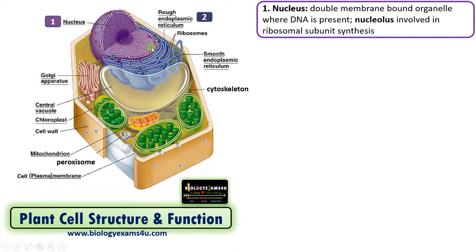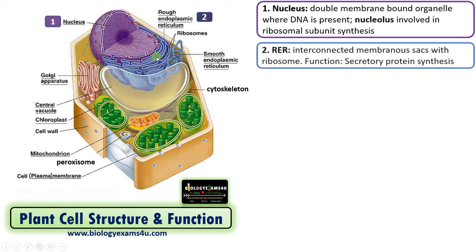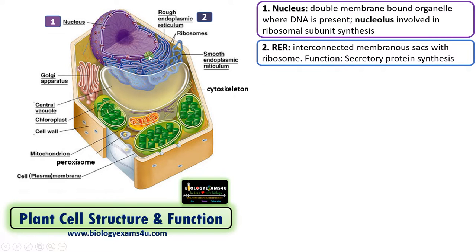The next organelle attached to the nuclear membrane is the RER, or rough endoplasmic reticulum. It is called rough because it is studded with ribosomes. Endoplasmic reticulum are interconnected membranous sacs, and the function is secretory protein synthesis. It is also involved in post-translational modification of proteins.